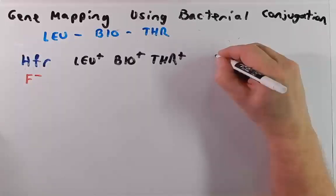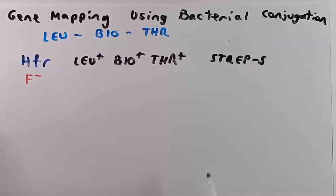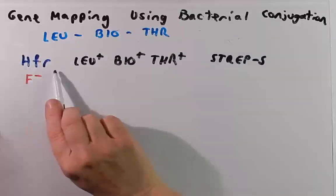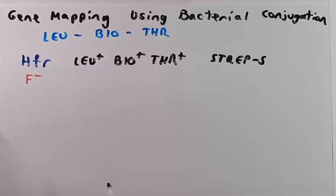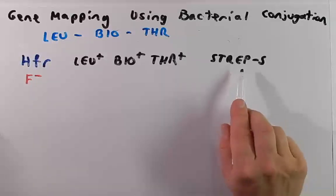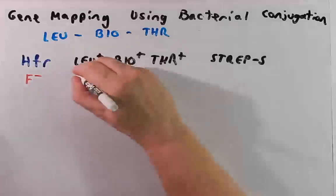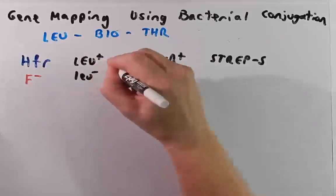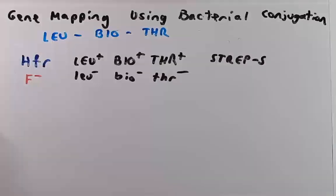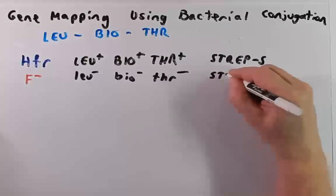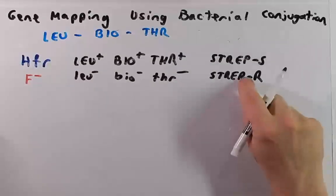The HFR strain will also have another gene that we'll refer to as strep-S, which means that this HFR strain is sensitive to streptomycin, meaning it cannot survive in the presence of streptomycin. The F-minus strain will be Leu-minus, bio-minus, threonine-minus, and it will be strep-R, meaning streptomycin resistant.